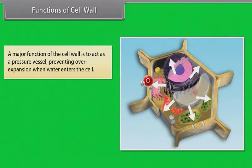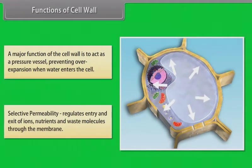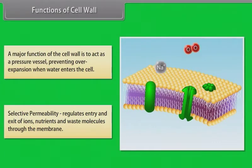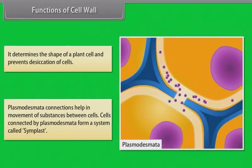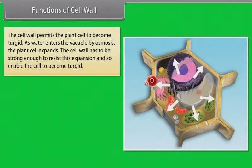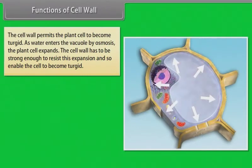Functions of cell wall. A major function of the cell wall is to act as a pressure vessel, preventing overexpansion when water enters the cell. Selective permeability: it regulates entry and exit of ions, nutrients and waste molecules through the membrane. It determines the shape of a plant cell and prevents desiccation of cells. The cell wall permits the plant cell to become turgid as water enters the vacuole by osmosis; the plant cell expands, and the cell wall must be strong enough to resist this expansion.